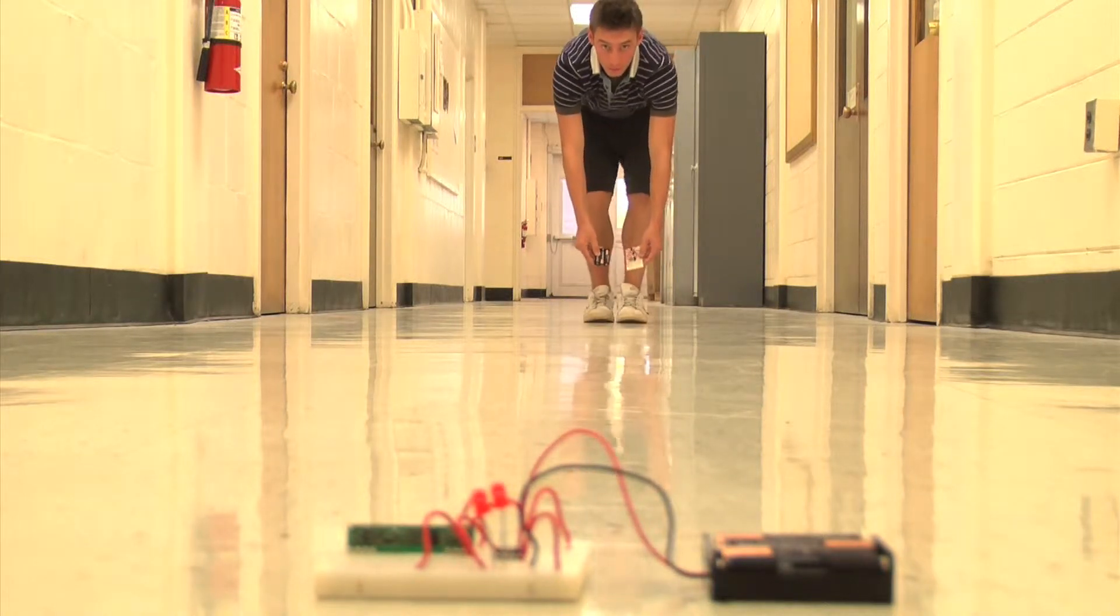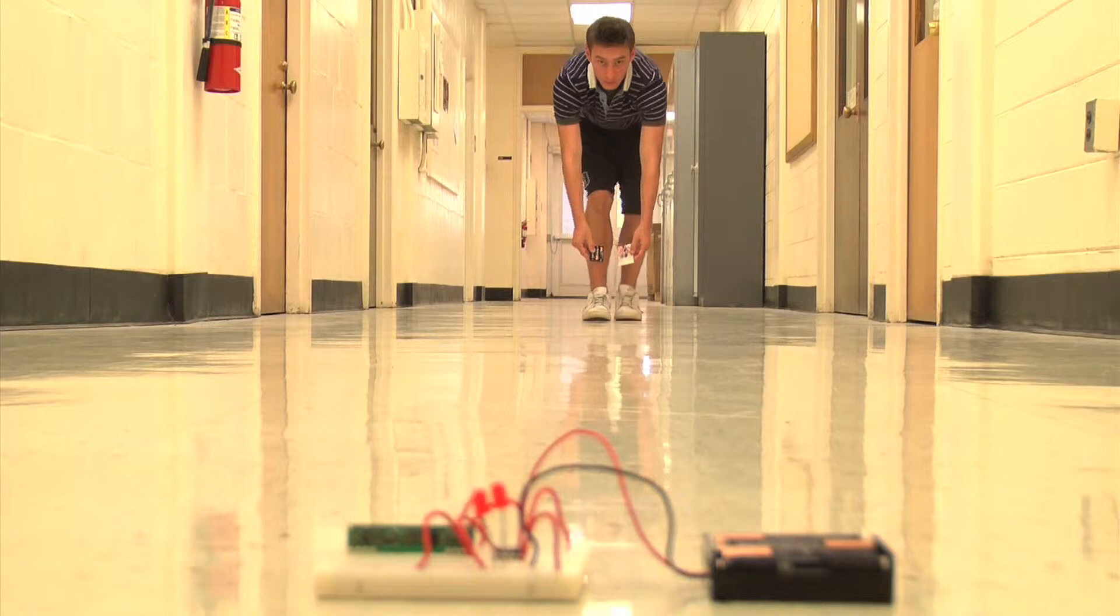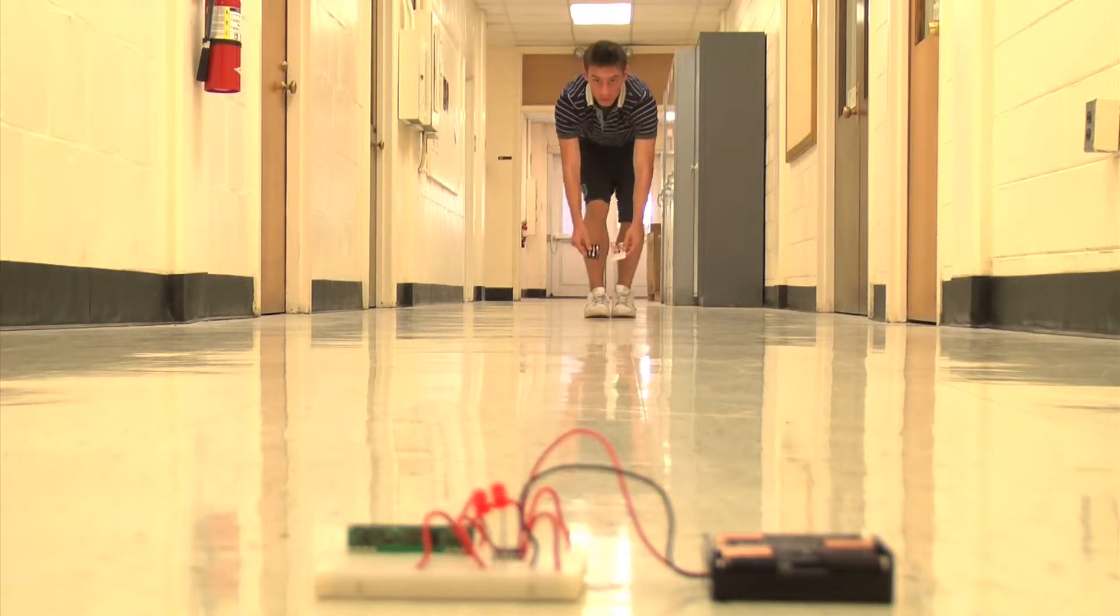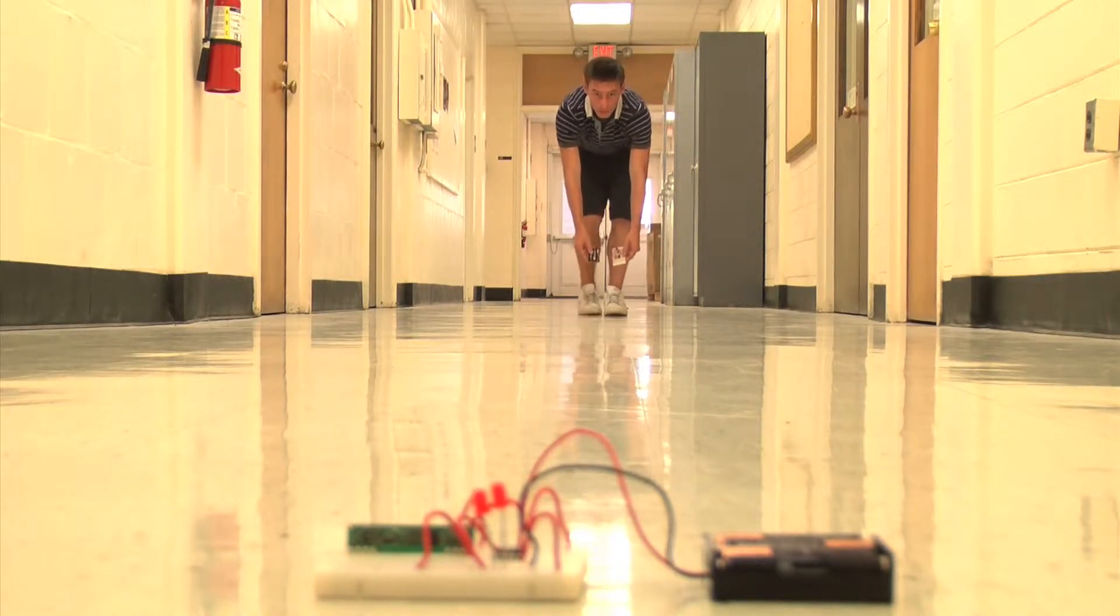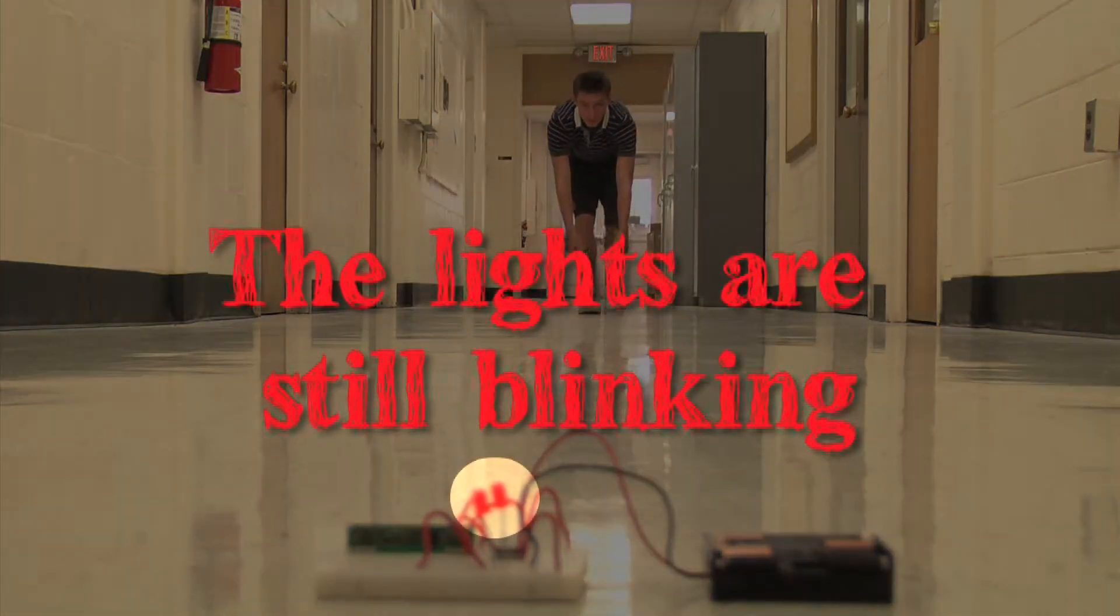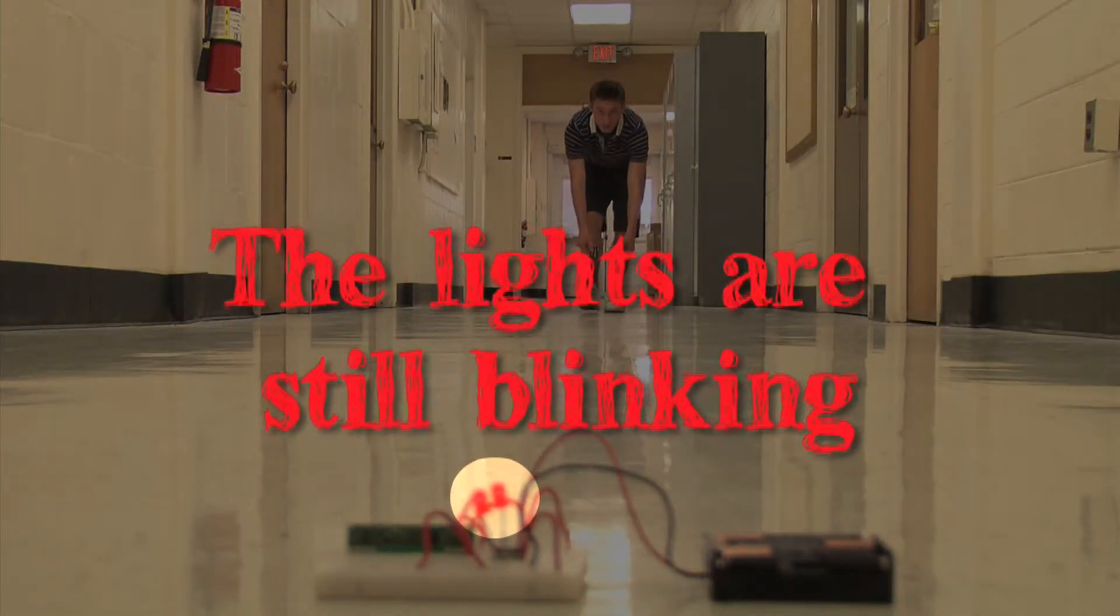Sometimes the lights will turn off even when the signal is in range. This is normal. As you can see, you can separate the transmitter and the receiver a lot farther with the antenna than without it.